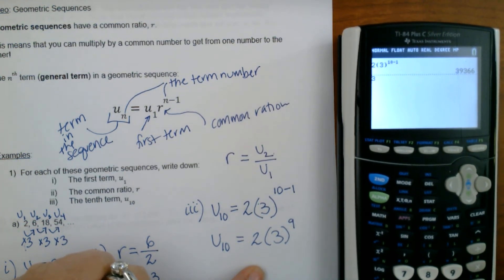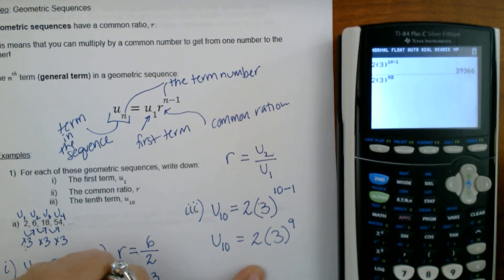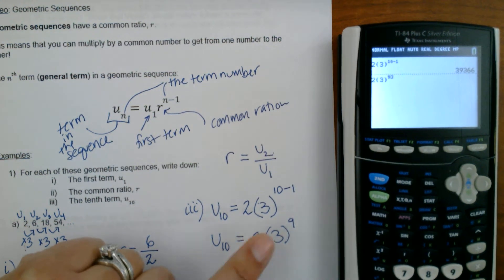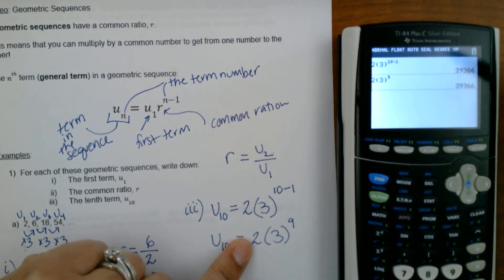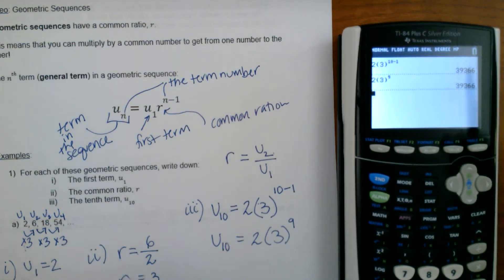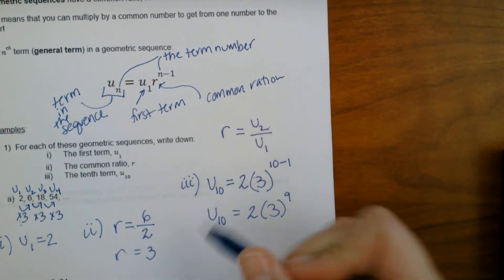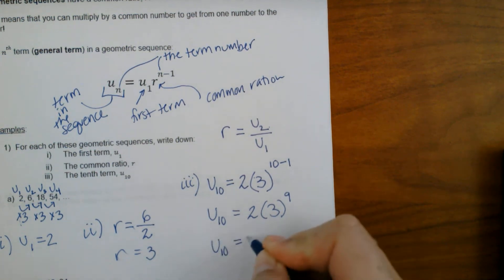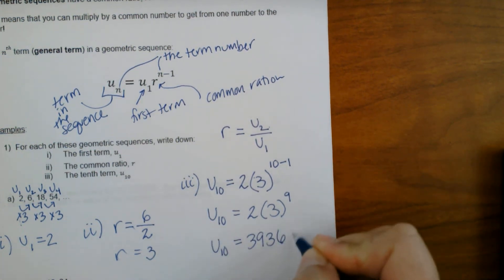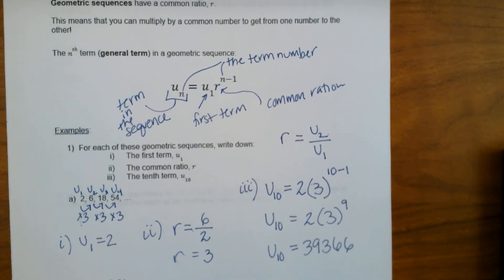You can enter it as 10 minus 1 or just raise it to the 9th — either way works and you get the same answer. So u sub 10 equals 39,366. That's how you find each part.